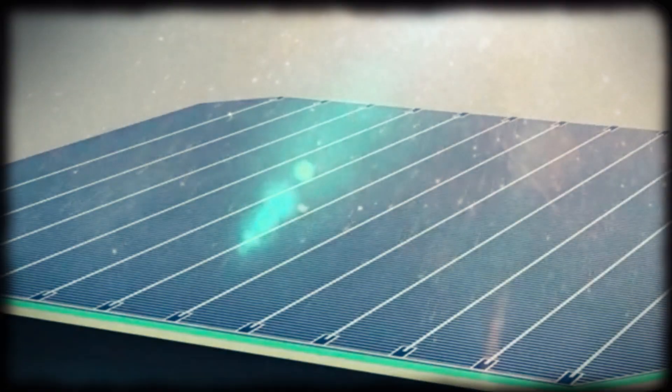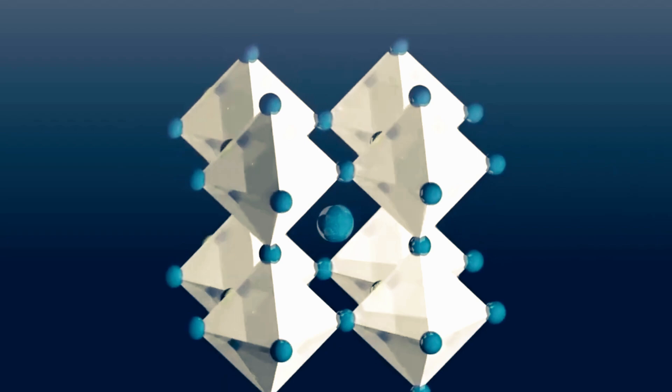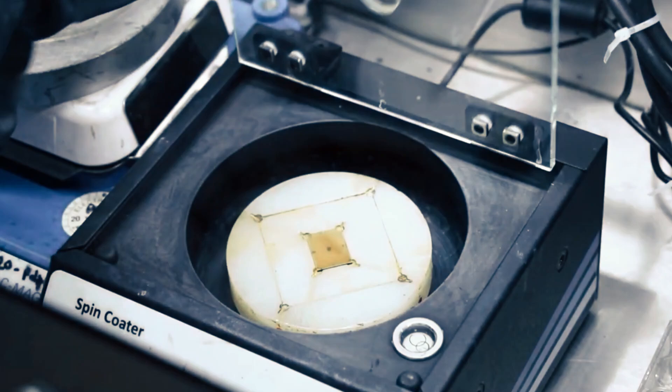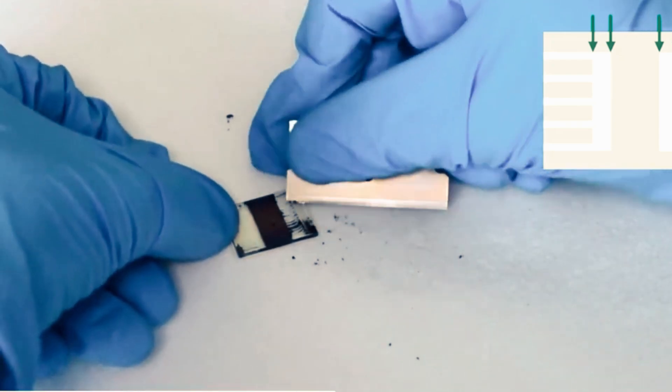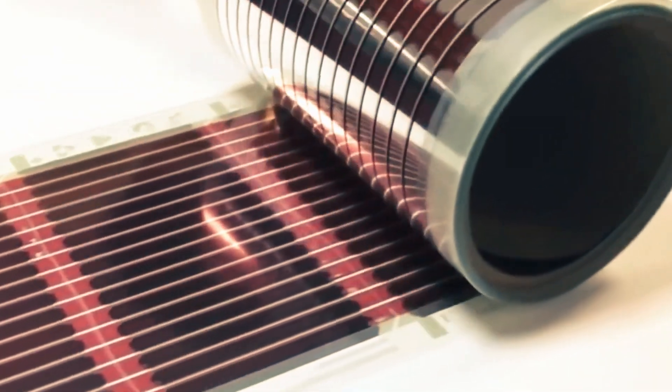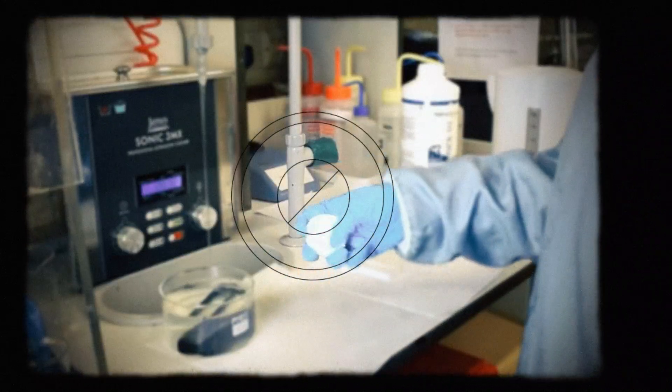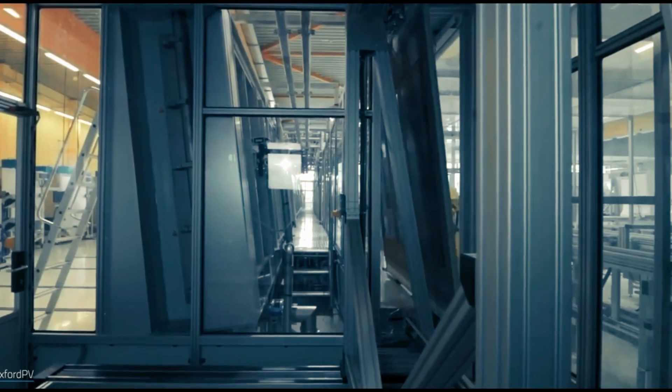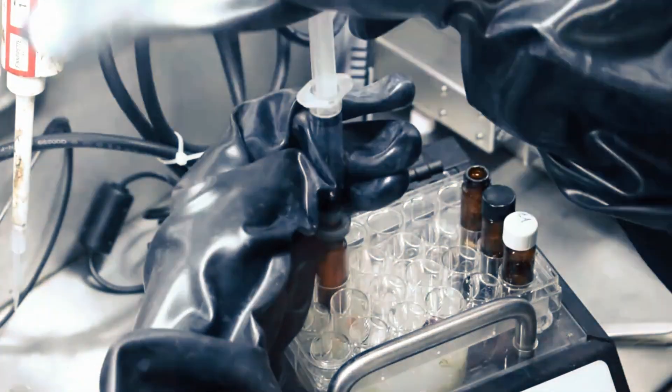Perovskite solar cells have shown remarkable performance in the laboratory, but transitioning to large-scale production brings about technical and economic hurdles. Currently, researchers are dedicated to tackling scalability challenges and refining manufacturing techniques for large-scale production. Explorations are underway to streamline production and cut costs through innovations like printing technologies, continuous manufacturing techniques, and automated assembly processes. The widespread deployment of perovskite solar panels has the potential to revolutionize the global energy landscape and accelerate the transition to renewable energy sources thanks to advancements in manufacturing capabilities.